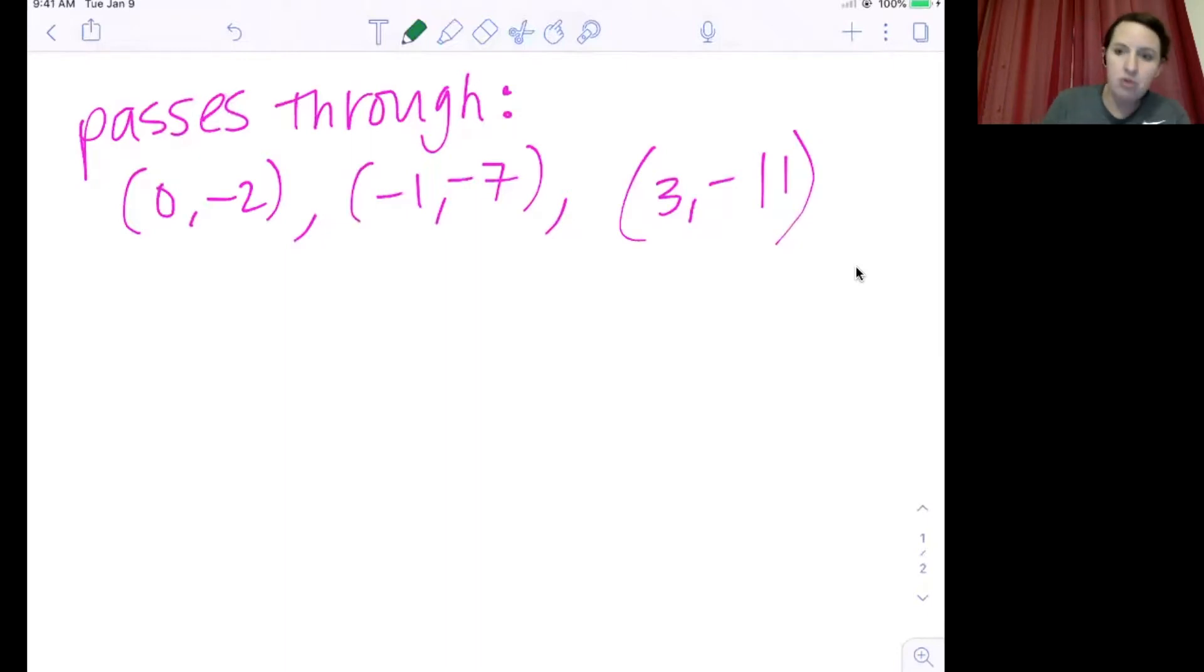In order to run our regression or to use the regression model, we're going to have to know that the standard form of a quadratic function is y equals ax squared plus bx plus c.